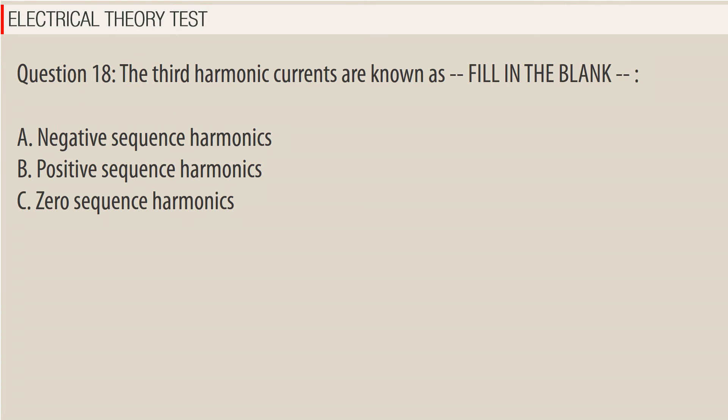Question 18: The third harmonic currents are known as — fill in the blank. A. Negative sequence harmonics. B. Positive sequence harmonics. C. Zero sequence harmonics.